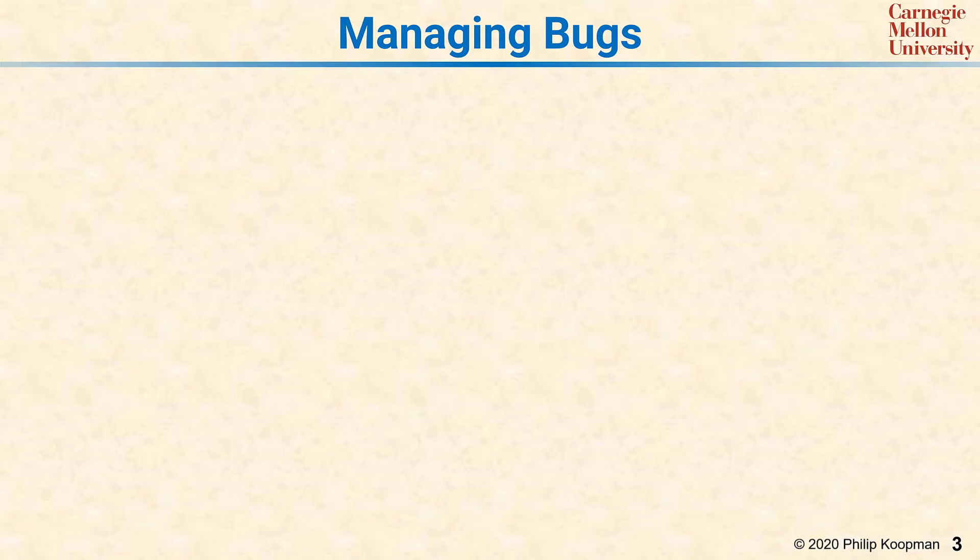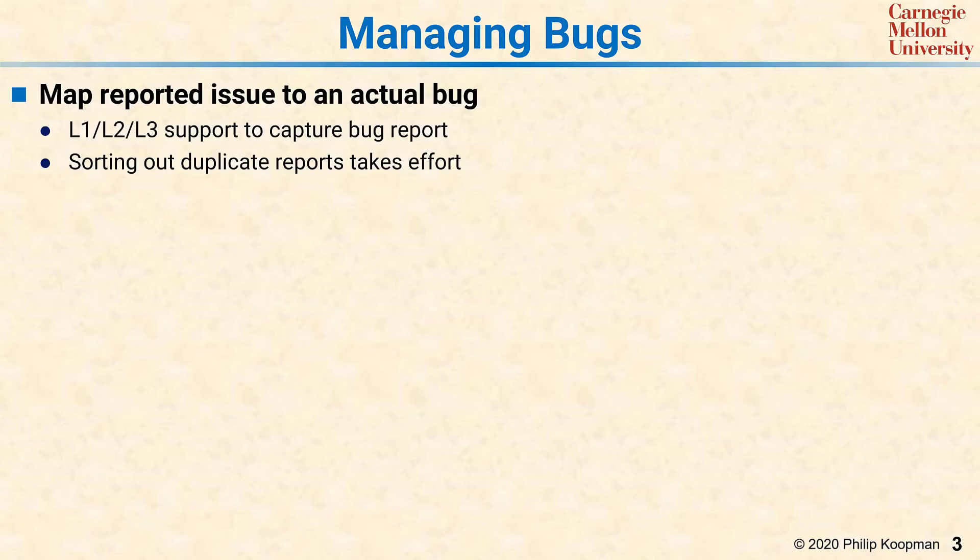The most obvious activity associated with software maintenance is fixing bugs, so let's start there. When a bug is reported, bug reports don't show up fully formed. Somebody has to notice there's a problem and that bug has to be reported. Once the software is released, those bug reports come in through a support organization. Typically there's a Level 1, Level 2, Level 3 support organization to capture the bug reports.